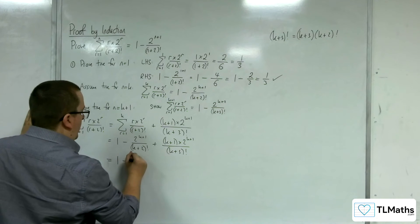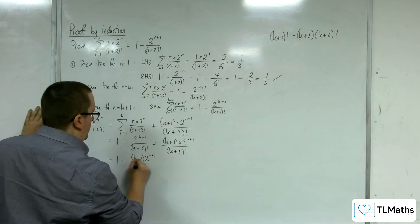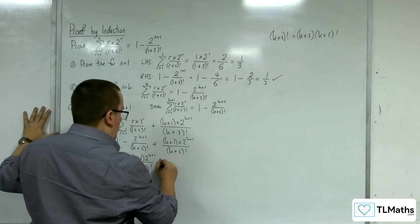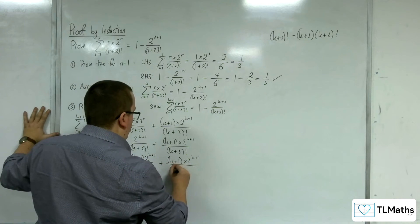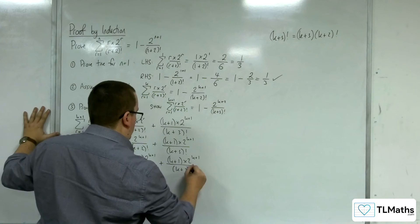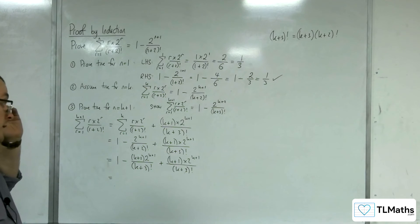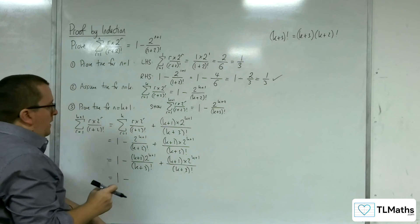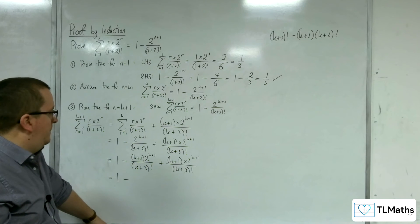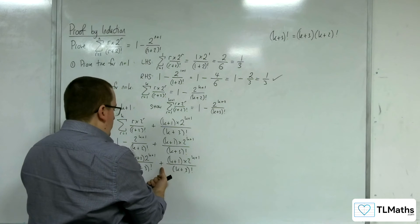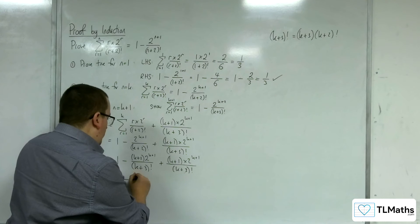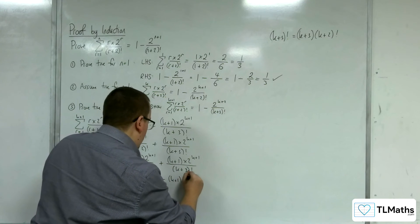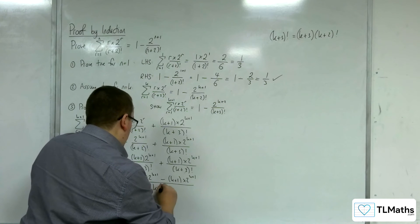So we've got 1 minus (k plus 3) times 2 to the k plus 1 over (k plus 3) times (k plus 2) factorial — which gives k plus 3 factorial — plus k plus 1 times 2 to the k plus 1 over (k plus 3) factorial. Now I have a common denominator and I can combine the two fractions. Being careful with the negative sign, the numerator becomes: (k plus 3) times 2 to the k plus 1, minus (k plus 1) times 2 to the k plus 1, all over (k plus 3) factorial.